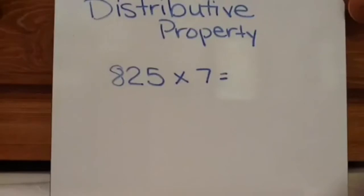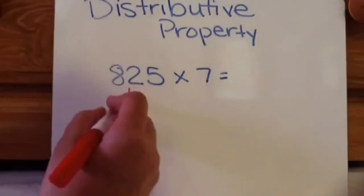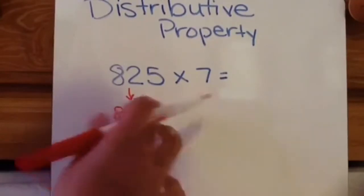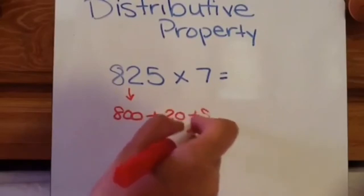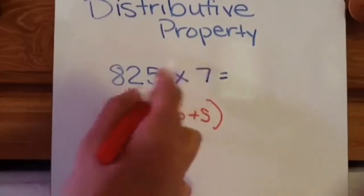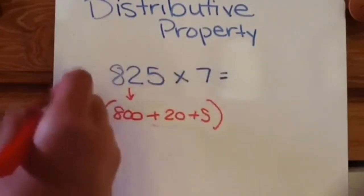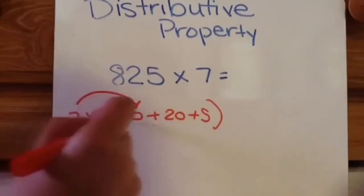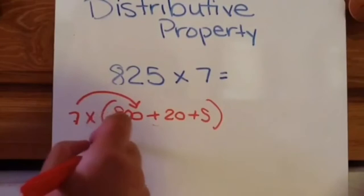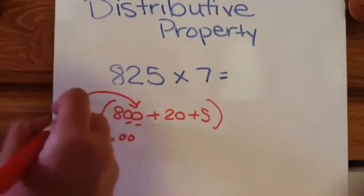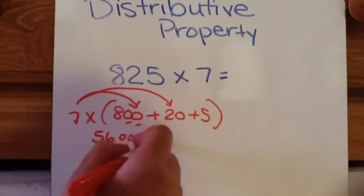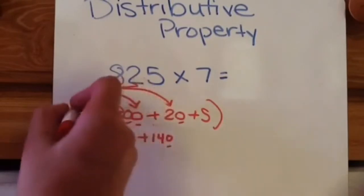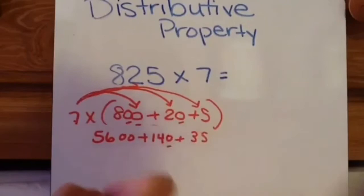Let's look at some more examples. So distributive property for 825 times 7. So first step is break this up into expanded form. So 800 plus 20 plus 5. This will be in parentheses, and then this times 7. You can put it here or here, it doesn't matter. And then the distributive part, what I always do when I'm first teaching this is draw the arrow to show. So we're doing 7 times 800. So that'll be 56 with two zeros. 7 times 20, which is 140. And then 7 times 5 is 35.